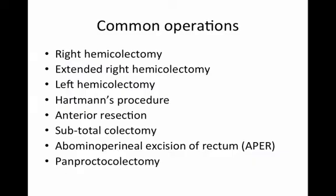Common operations: starting from the ileocecal junction, working our way around the colon to the rectum, we start with the right hemicolectomy, then the extended right hemicolectomy, left hemicolectomy, Hartman's procedure, anterior resection, subtotal colectomy, abdominoperineal excision of the rectum or APER — sometimes known as abdominoperineal resection — and finally panproctocolectomy. We'll talk about each of these operations in turn, and by the end of the podcast you should have a better idea of what each one involves.